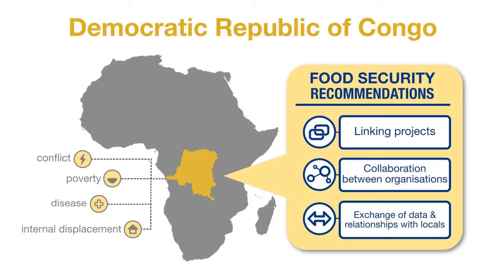For the DRC, the Democratic Republic of the Congo — a country long plagued by continuous conflict — we noted it has experienced chronic food insecurity, extreme poverty, disease, internal displacement, and remains one of the poorest and least developed countries globally. Here we looked at collaboration as the main focus, because so many regions in the DRC are difficult to reach due to conflict or geographic position.